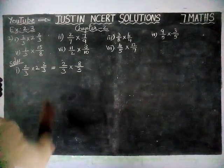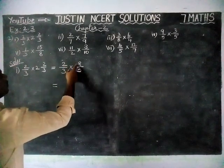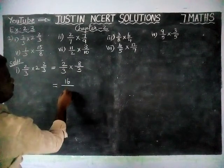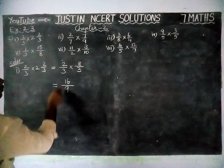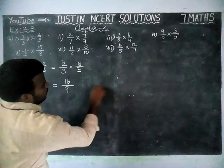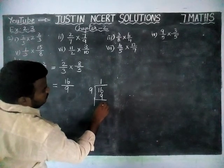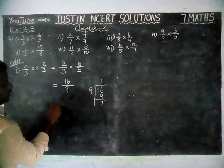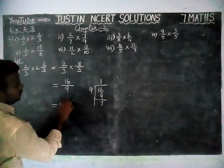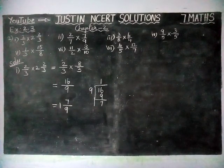Now if it is possible to simplify, we can simplify. Here we cannot simplify, so we are multiplying: 8 × 2 = 16, divided by 3 × 3 = 9. So we get 16/9. Now this is an improper fraction, we are going to convert into mixed fraction. In 16, we have one 9, and the remaining is 7. So the quotient comes in the whole part, the remainder comes in the numerator, and the divisor comes in the denominator. So the answer is 1 7/9.